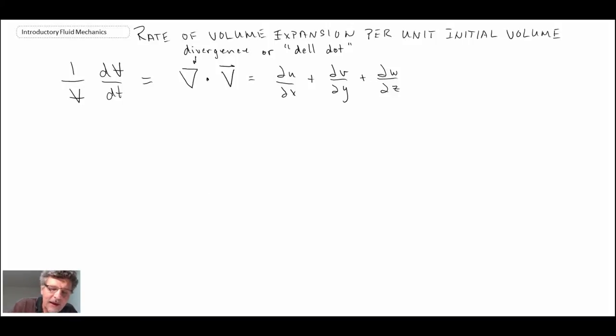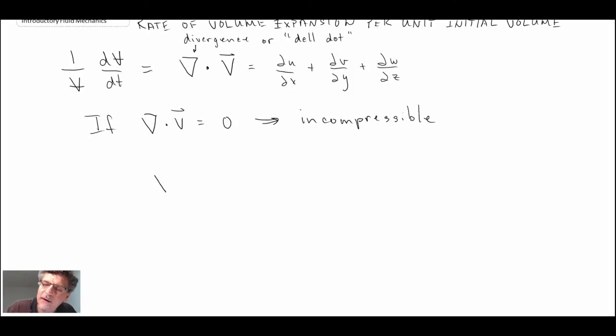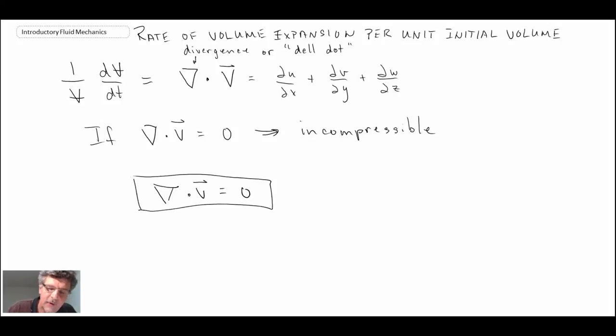So, del dot is expressed as that in terms of partial derivatives of our three velocity components, u, v, w. And if it turns out that we have a flow where del dot v is equal to zero, this would be the case where the volume does not expand or contract in the fluid flow, and that is what we would call incompressible. So, if you're dealing with a fluid mechanic problem and they say the flow is incompressible, that tells you immediately that you're dealing with something where del dot v is equal to zero.